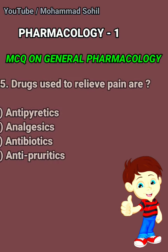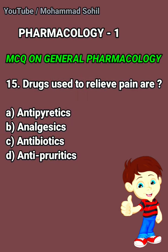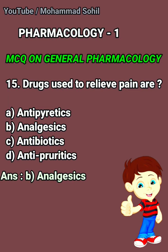Question number 15 is: drugs used to relieve pain are — option A: antipyretics, option B: analgesics, option C: antibiotics, and option D: antipyretics. You have 10 seconds to answer this question, or you can drop your answer in the comment box. The right answer is option B, analgesics.